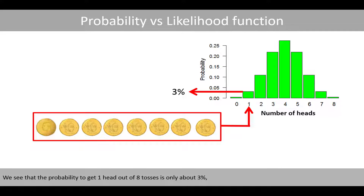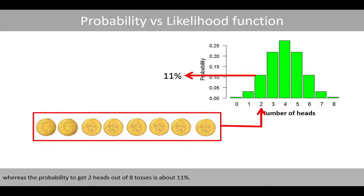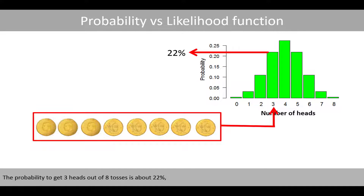We see that the probability to get one head out of eight tosses is only about 3%. The probability to get two heads out of eight tosses is about 11%. The probability to get three heads out of eight tosses is about 22%, which corresponds to the probability to get five heads out of eight trials.